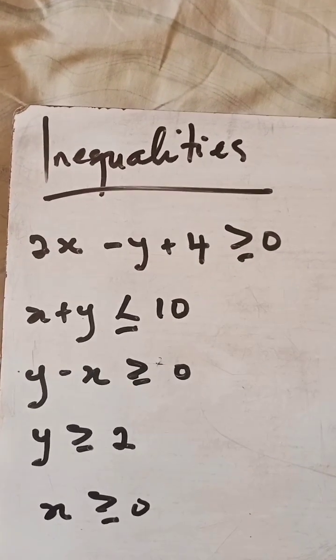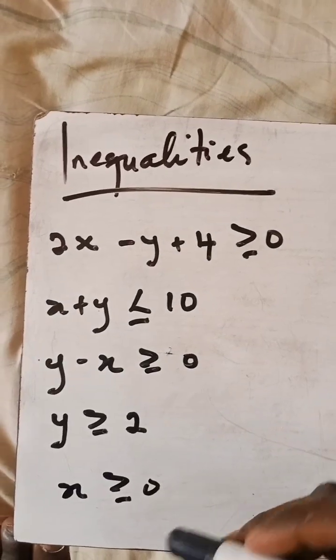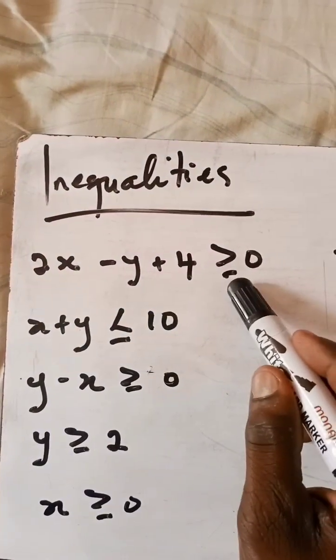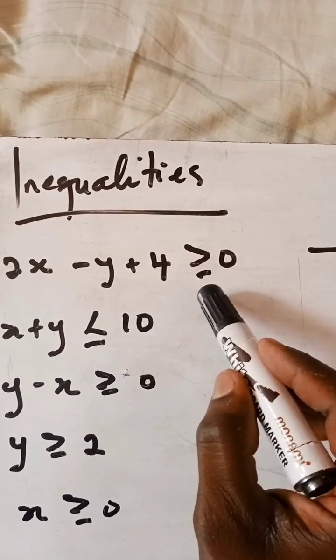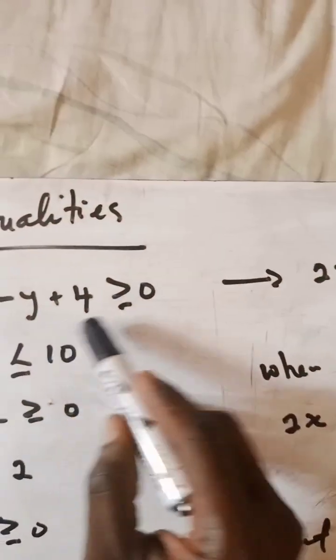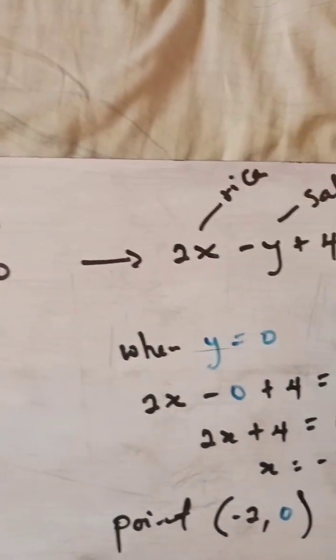Graphing two variables and inequalities. These are the inequalities that we are given. So dealing with the first one, your first step is changing this inequality to an equal sign.